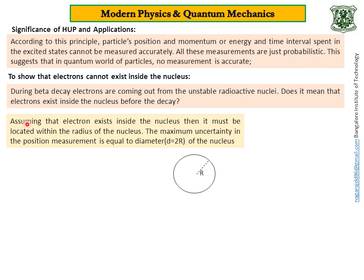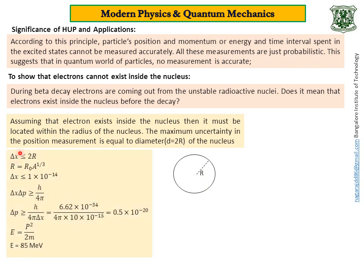First, assume that the electron exists inside the nucleus. If at all it is existing inside the nucleus, it must be located within the radius of the nucleus. The maximum uncertainty in the position measurement equals the diameter, which is two times the radius. The electron can be seen anywhere within the nucleus, and the difference between the extreme positions is the diameter. So delta x is less than or equal to 2r, and we know the radius of the nucleus is r0 times A to the power of one-third, where A is the mass number.